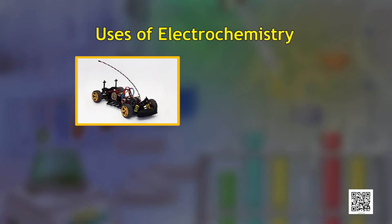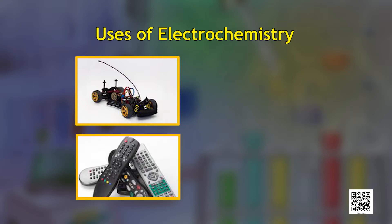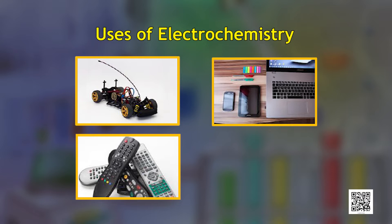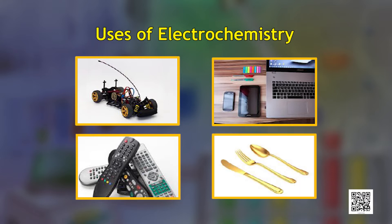Electrochemistry finds its existence in theoretical as well as practical approaches. Right from the cells and batteries used in toy cars, robots, or remote controls, to mobile phones and laptop batteries, and processes like gold plating — electrochemistry can be explained everywhere. Electrochemistry is the branch of chemistry that deals with the relation between electrical and chemical transformations.